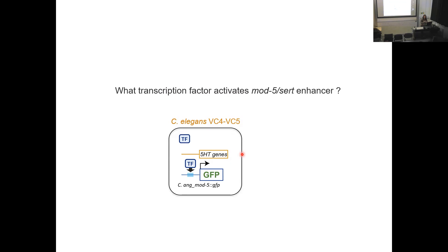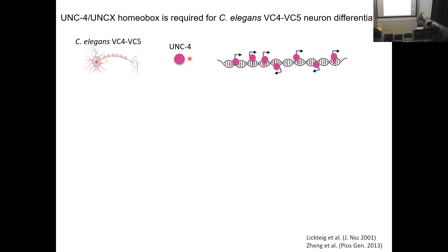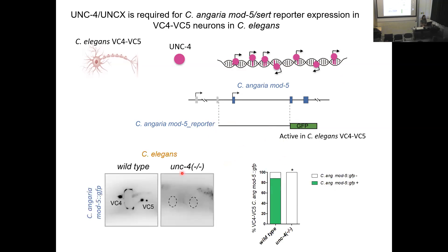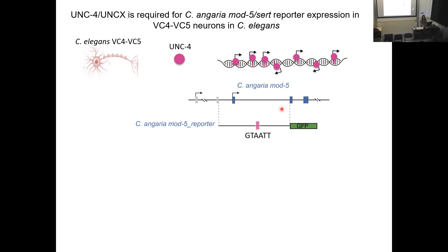Which transcription factor is activating MOD5 in the Angaria VC4 and VC5? We already knew there is a terminal selector for these neurons in C. elegans called ANP4, a LIM homeodomain transcription factor. Could the terminal selector for VC4 and VC5 in C. elegans now also activate the Angaria MOD5 enhancer? We put the Angaria MOD5 reporter into the ANP4 mutant — and yes, without ANP4, C. elegans VC4 and VC5 cannot activate the expression. We then did promoter analysis, deletional bashing, and site-directed mutagenesis, and identified the particular ANP4 binding site that drives expression.